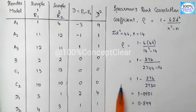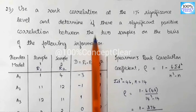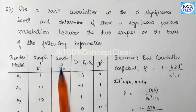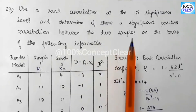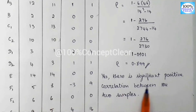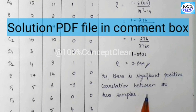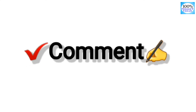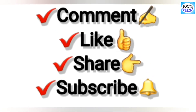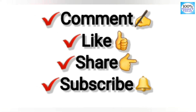The R value of the Spearman's Rank Correlation Coefficient is 0.899. We determine if there is a significant positive correlation between the two samples. The answer is yes — there is a significant positive correlation between the two samples. If you have any questions about this video, please leave a comment. Share this video with your friends and subscribe to our channel. Thank you for watching.